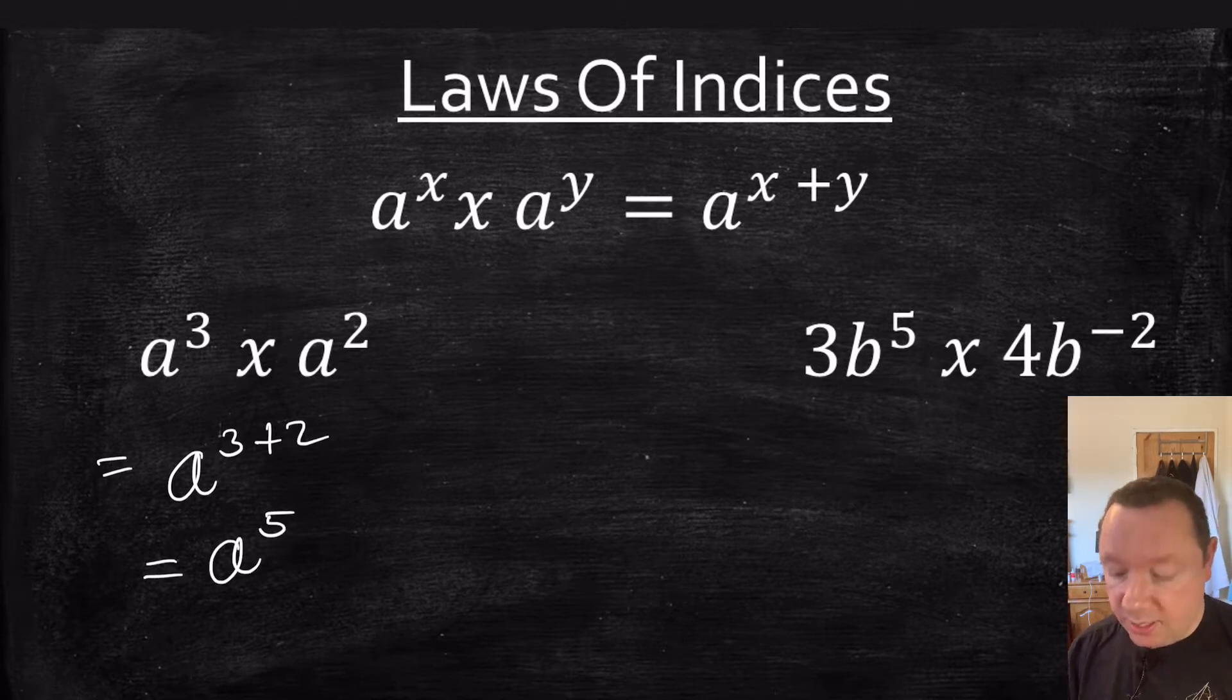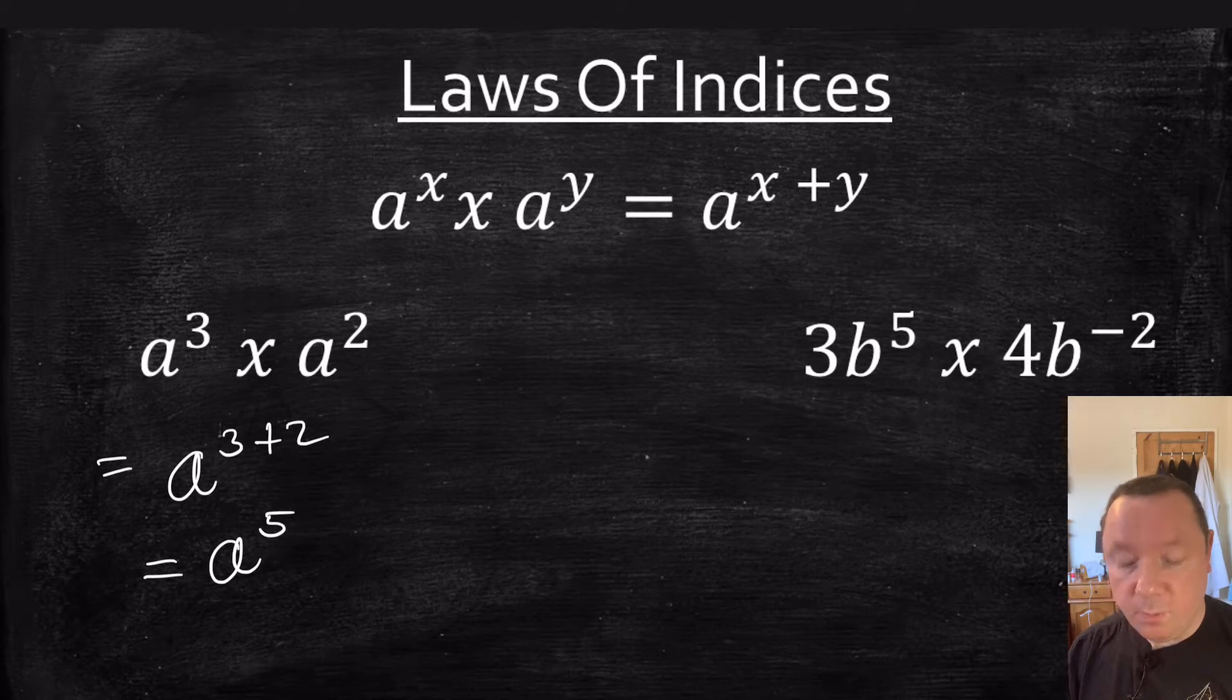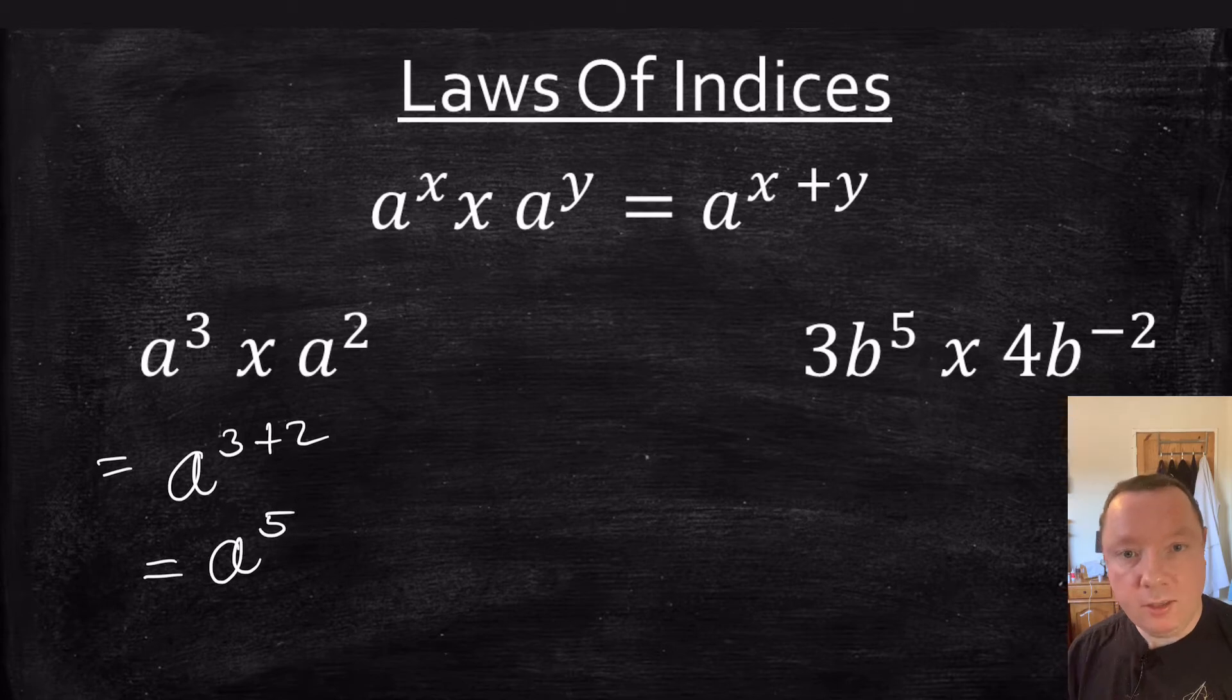Second example: 3b to the power of 5 times 4b to the power of negative 2. Don't be tempted to add the 3 and 4 here. They are not indices, they just get times together as normal.